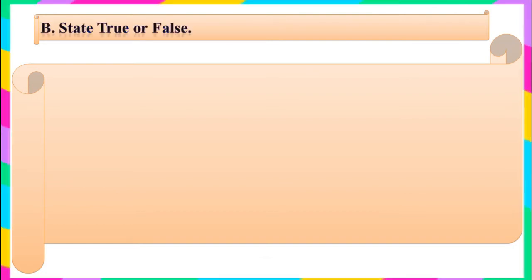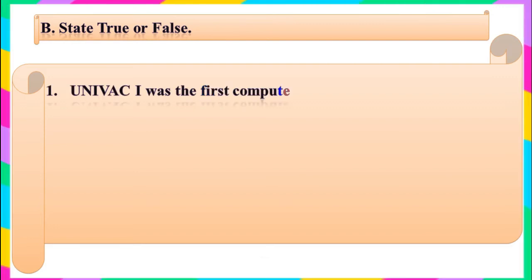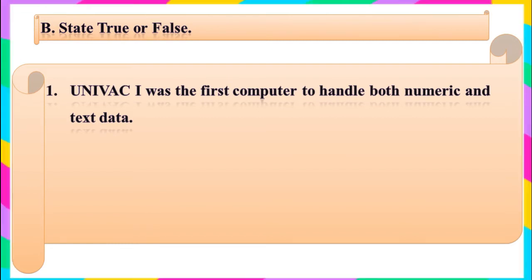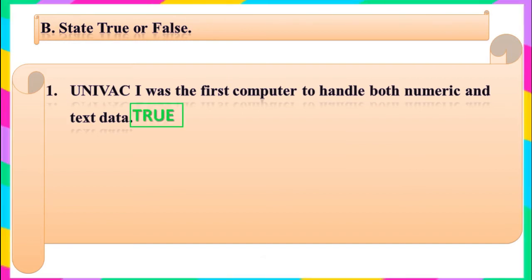B. State true or false. Question 1: UNIVAC 1 was the first computer to handle both numeric and text data. Children, is this statement true or false? Can you guess the answer? Yes, you are right. It is true.